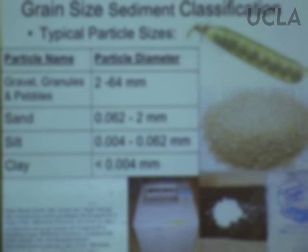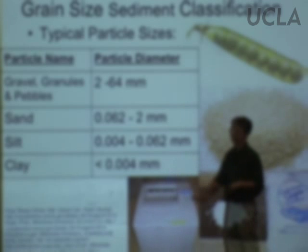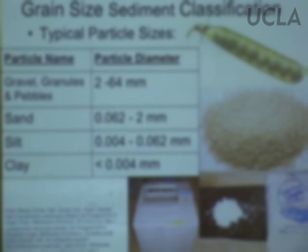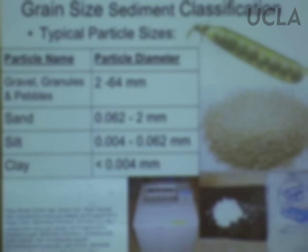Clay particles are the finest of all — less than four one-millionths of a meter across. There's no way you'll see an individual clay particle; it's even very difficult under a normal optical microscope because the wavelength of light is a fraction of a micron, and these particles are roughly the same size as the light you're trying to use to see them with. Usually you need an electron microscope to get a good picture of clay-sized particles. When we look at biological sediments, we'll see lots of electron microscopy slides, because that's the best way to image these things.